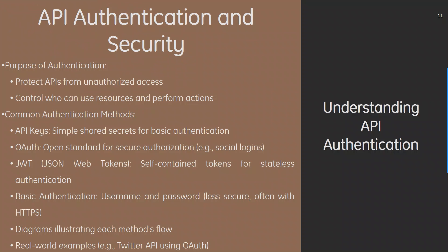We now have API authentication and security. The purpose of authentication is to protect APIs from unauthorized access and control who can use resources and perform actions. Common authentication methods include API keys as simple shared secrets, OAuth as an open standard for secure authorization, JWT (JSON Web Token) as self-contained tokens for stateless authentication, and basic authentication with username and password, which is less secure and often used with HTTPS.